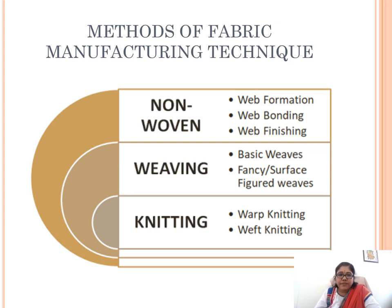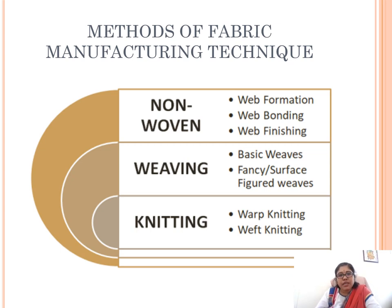In the next slide, we see about the methods of fabric manufacturing techniques — non-woven, weaving, and knitting. For non-woven making, we follow three techniques: web formation, web bonding, and web finishing. In weaving, we make fabric by two techniques: basic weaves and fancy or surface figured weaves. In knitting, we produce garments in two techniques: warp knitting and weft knitting.